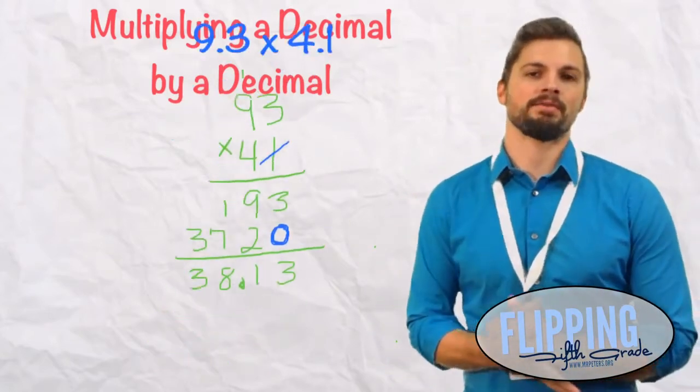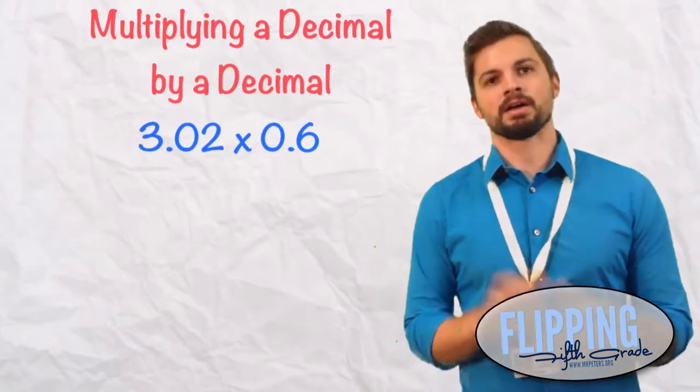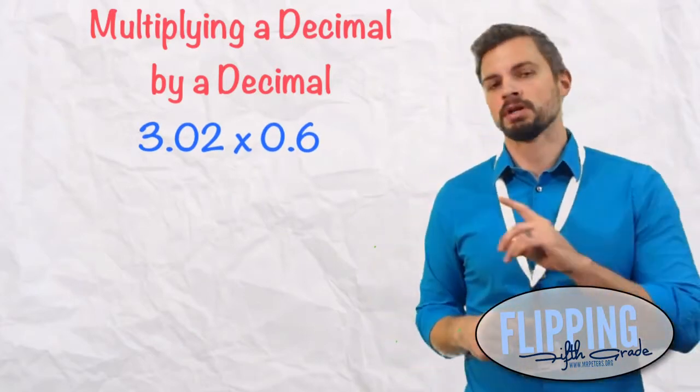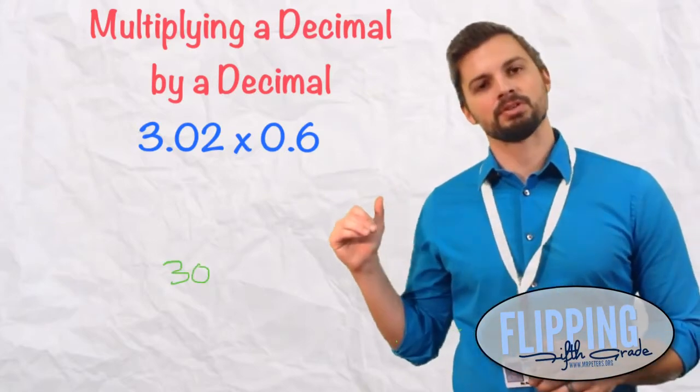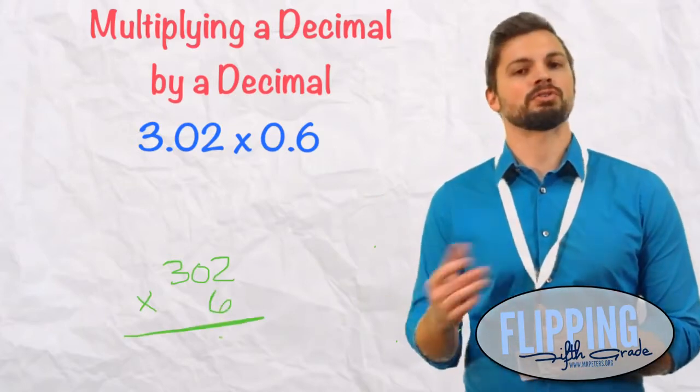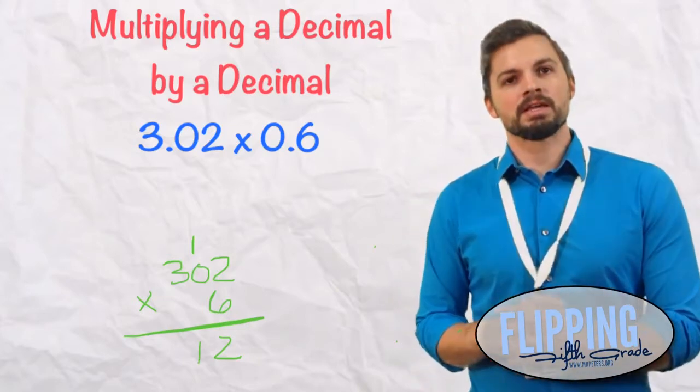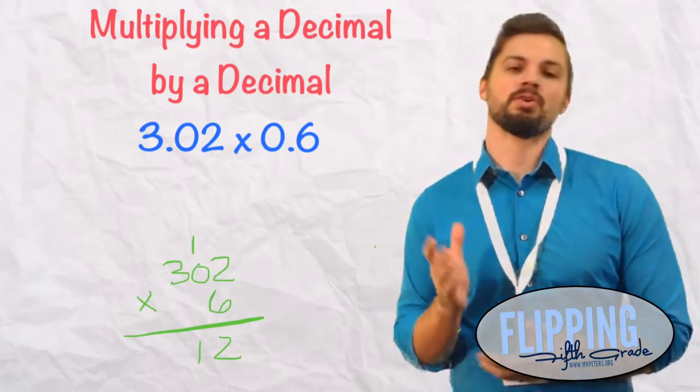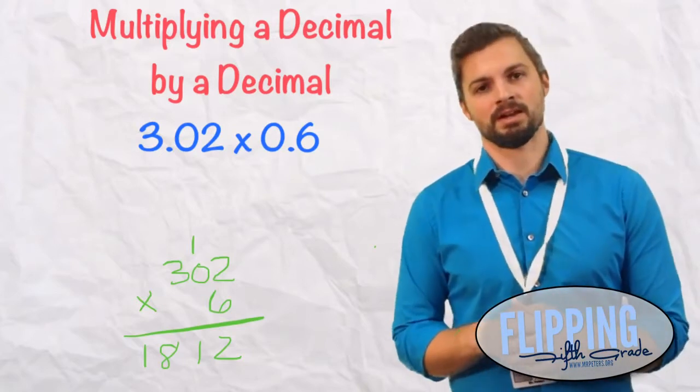The next example we have here is 3 and 2 hundredths times 6 tenths. Again, we're treating this like 302 times 6. So let's do the problem here. 6 times 2 is 12, put down that 2, carry the 1. 0 times 6, well that's 0, plus 1 is 1. 3 times 6 is 18. So we have our temporary answer here of 1812.